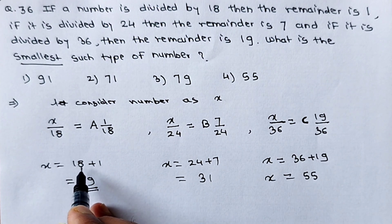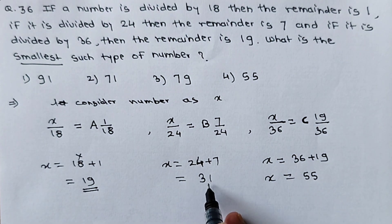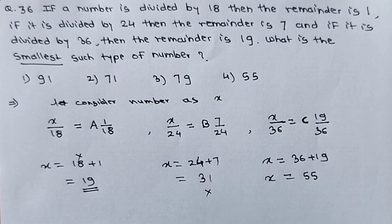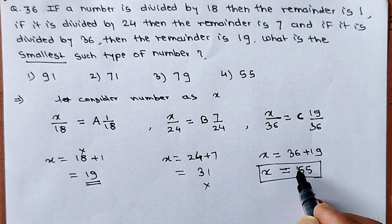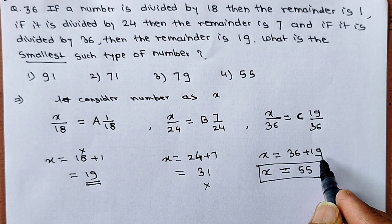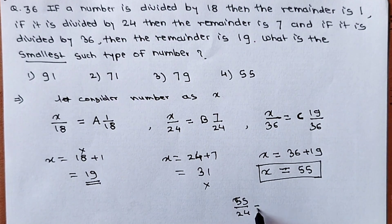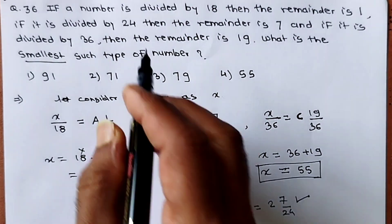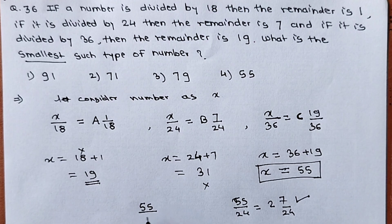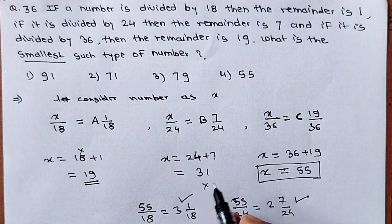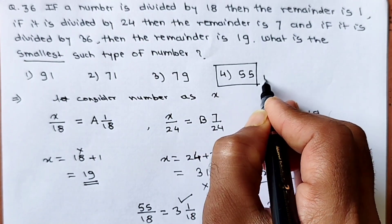If x is 18, it is not divisible by 24 as it is less than 24 — not a valid option. If x is 31, it is not divisible by 36 — also not correct. But if x is 55: divided by 36 gives remainder 19 ✓; 55 divided by 24 gives quotient 2 and remainder 7 ✓; 55 divided by 18 gives quotient 3 and remainder 1 ✓. So 55 is our correct answer — option 4.